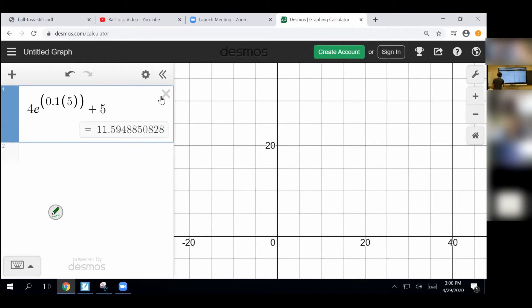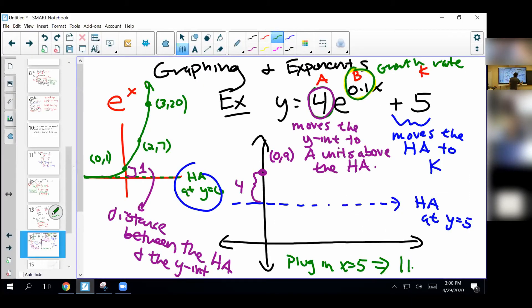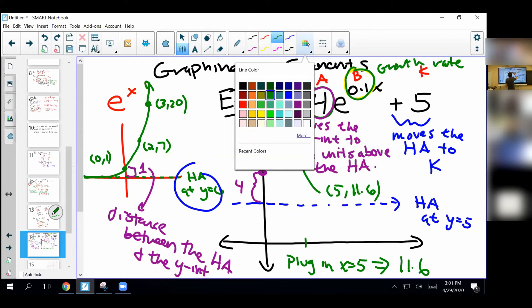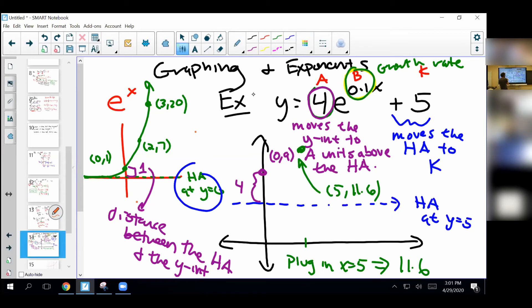There we got 11.6 so that's another point on my graph right here and so this basically is going to tell me what my graph looks like. Let me do this in orange so maybe make it stand out. Here's what the graph is going to look like. I'm going to start on my asymptote in this case, go up through this point, up to this point, and kind of make a nice smooth curve and there you go, there's the graph.